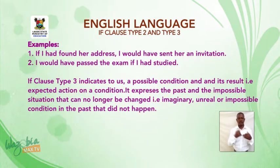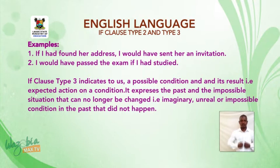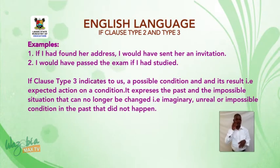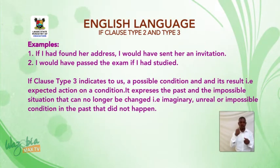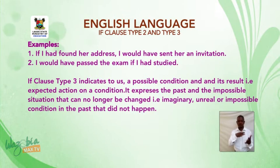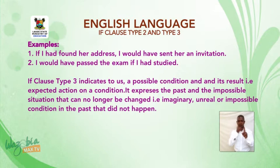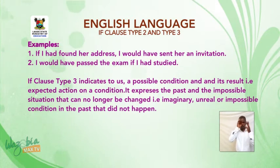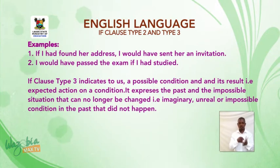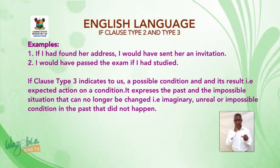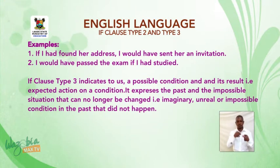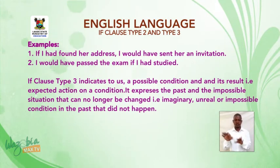Examples: One, if I had found her address, I would have sent her an invitation. Two, I would have passed the exam if I had studied. If clause type 3 indicates a possible condition and its result — that is, expected action on a condition. It expresses the past in the impossible situation that can no longer be changed — that is, imaginary, unreal, or impossible condition in the past that did not happen.